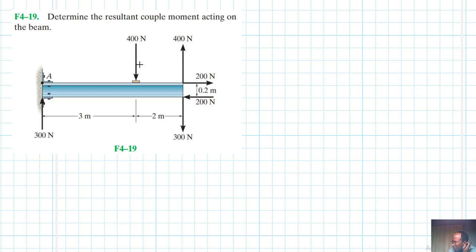We work out each individual couple moment and then sum them algebraically. So here we'll have a couple moment in this direction, here we'll have a couple moment in this direction,